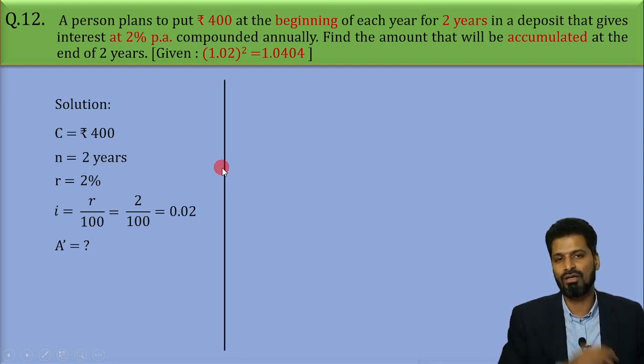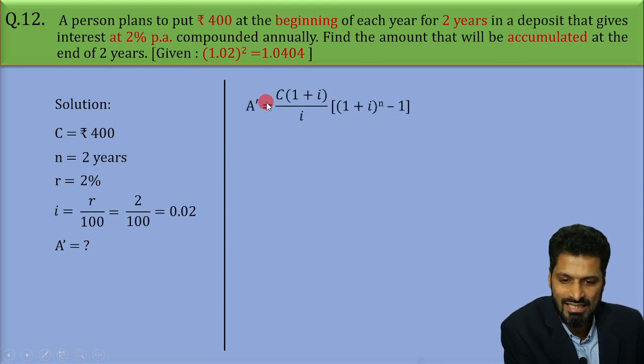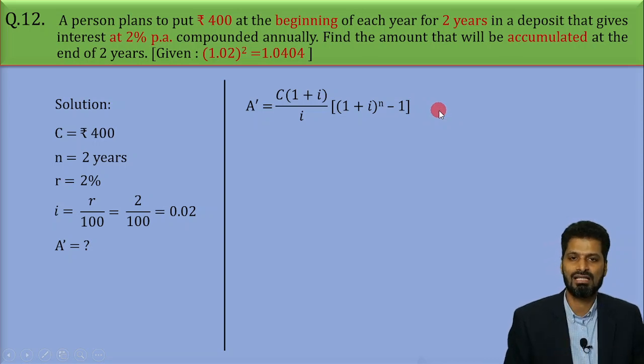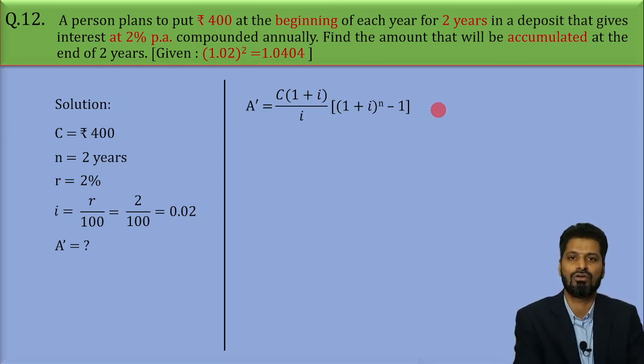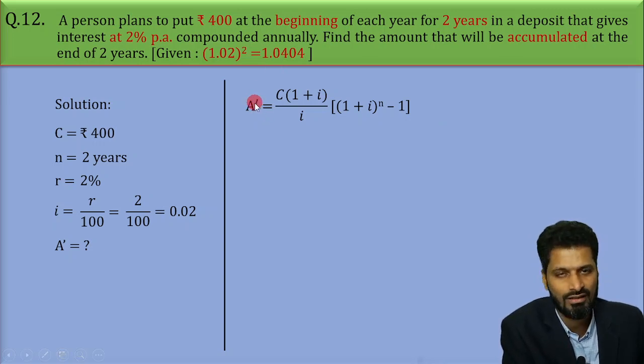Now, can you tell me what is the formula for A dash? Yes, it is quite easy. A dash is C into 1 plus i upon i into 1 plus i the whole raised to n minus 1. Now, simply you have to plug in the values in the formula and get the value, get the accumulated value or A dash, right?